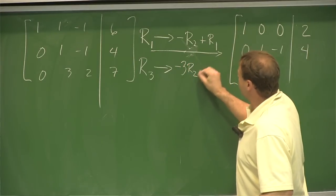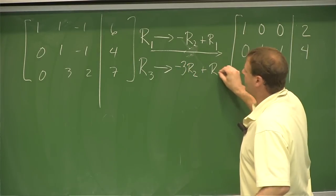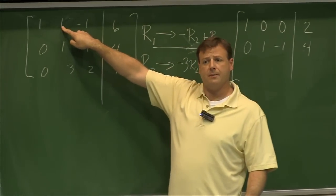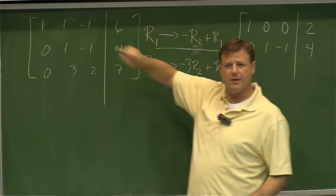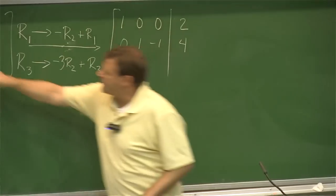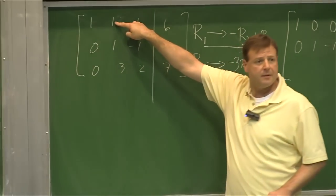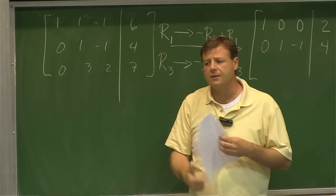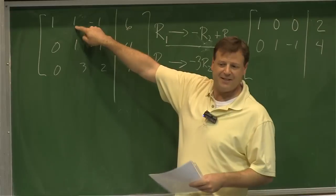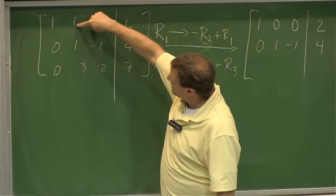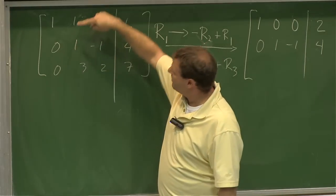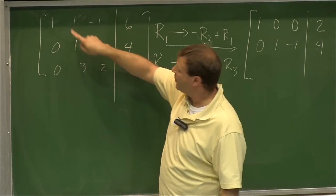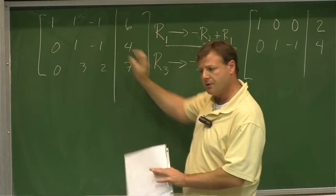Now some of you might ask why not use row 1 to eliminate that 3 instead of row 2? If I used row 1, multiplying it by something and adding it, I'd ruin those zeros I worked hard to get. Once I've used a row to eliminate stuff, I want to move on to a different row.